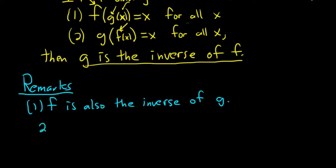The second remark is that the notation we use for the inverse is f inverse, and it's read f inverse. So it looks like an exponent, but it's not really an exponent. So f inverse is not equal to 1 over f.